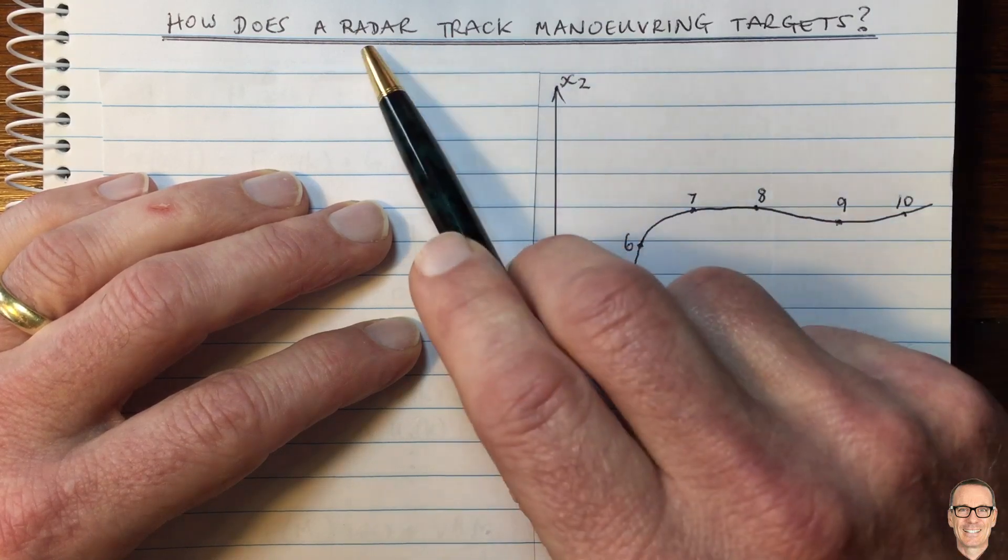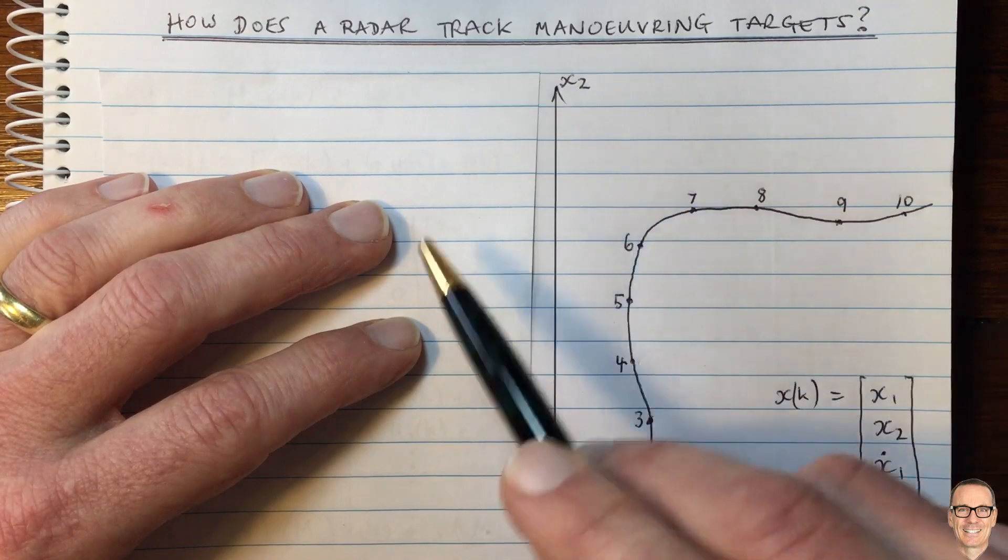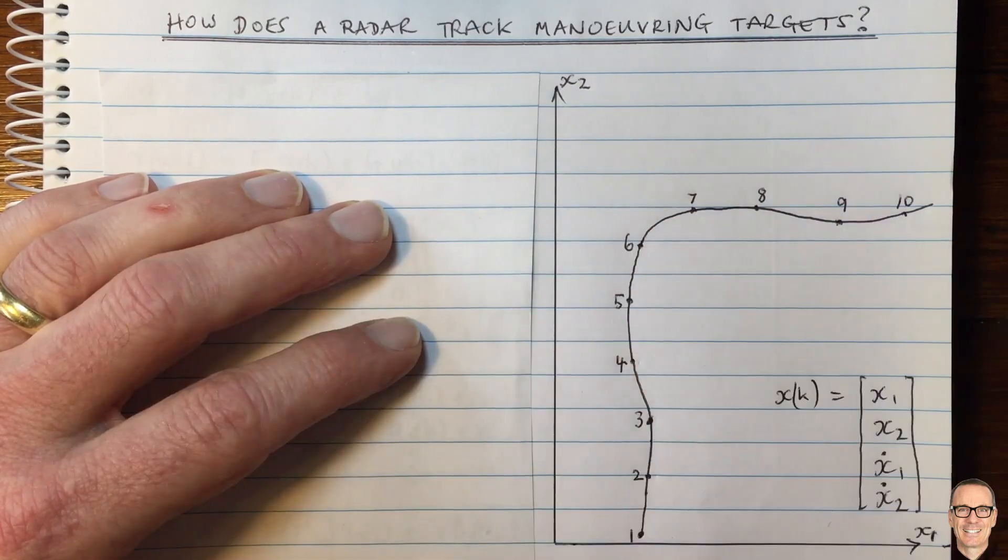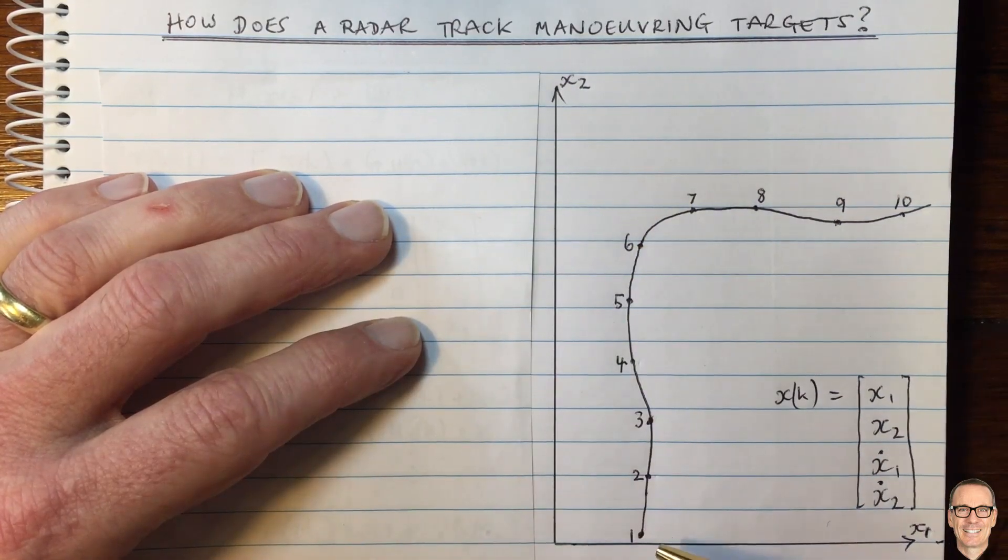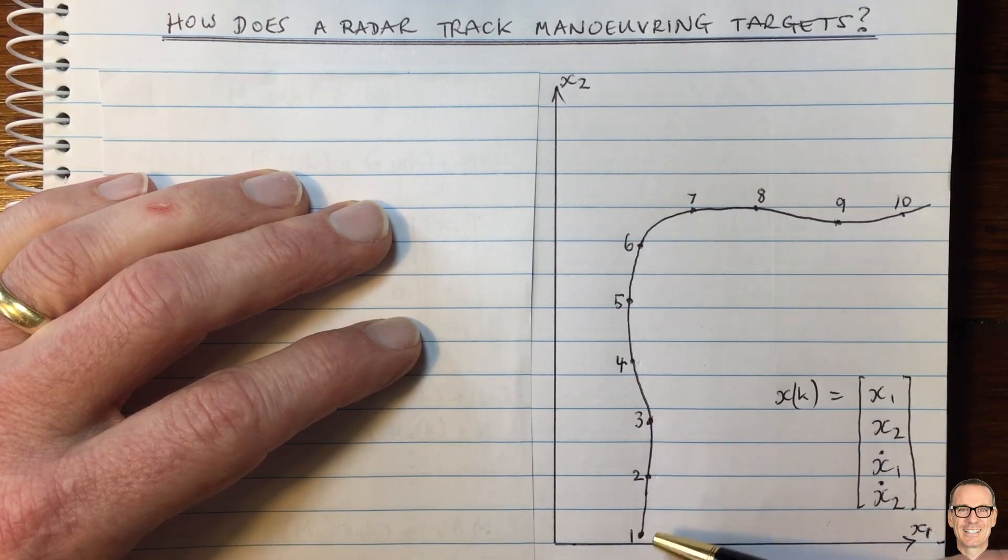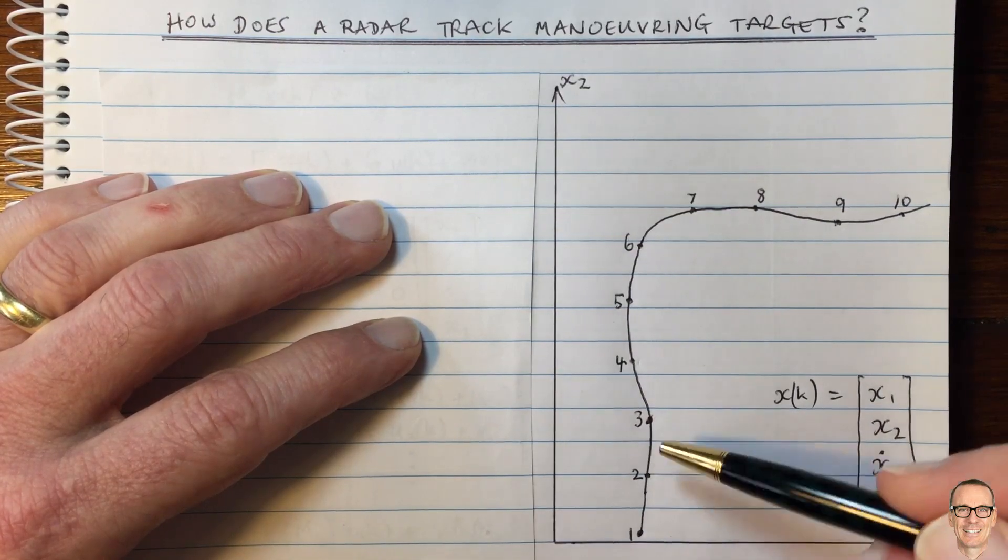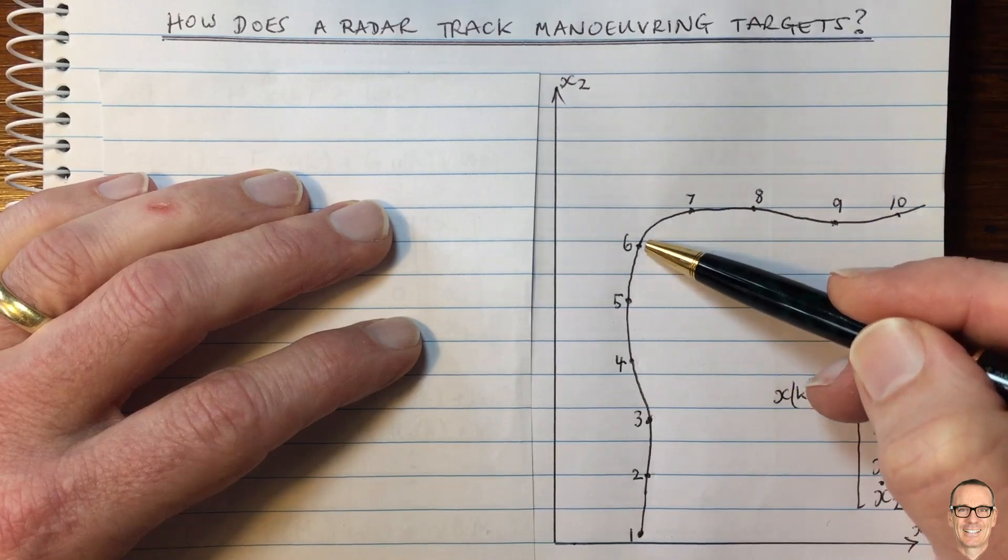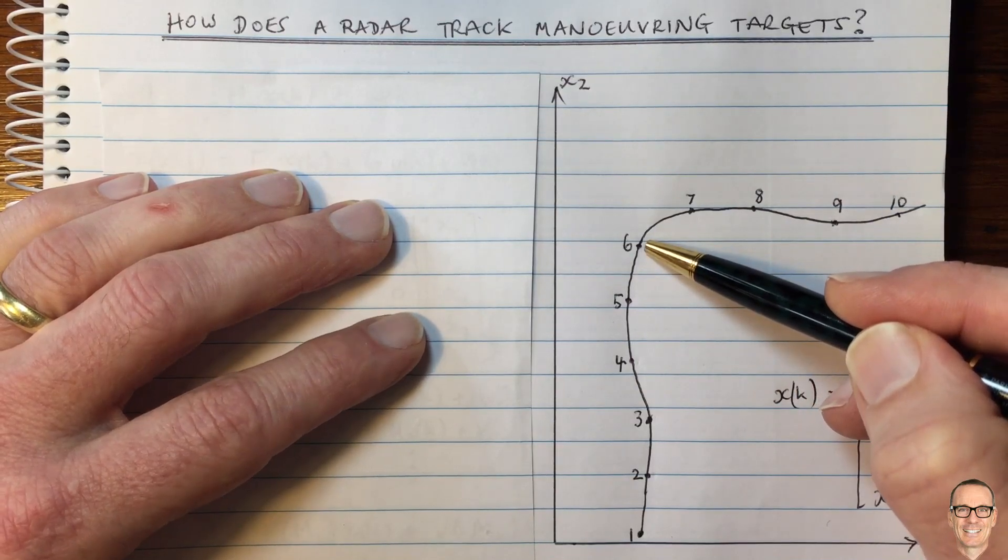So a radar emits regular pulses and cycles around in an angular direction. And each time the pulse is sent in the direction of this target, it illuminates the target and that's what I'm showing with these dots. So these are the actual locations.